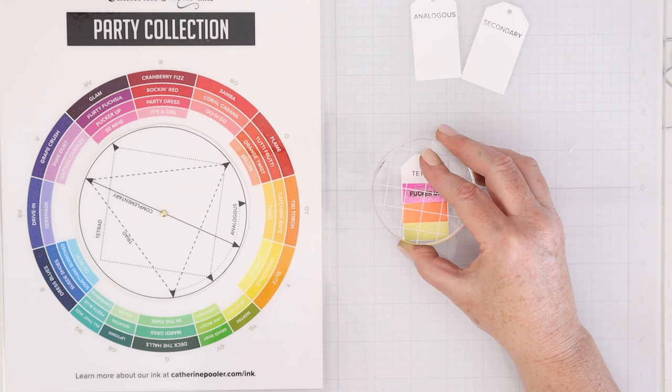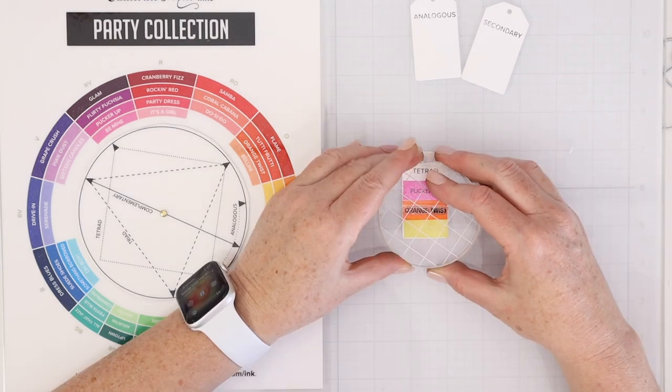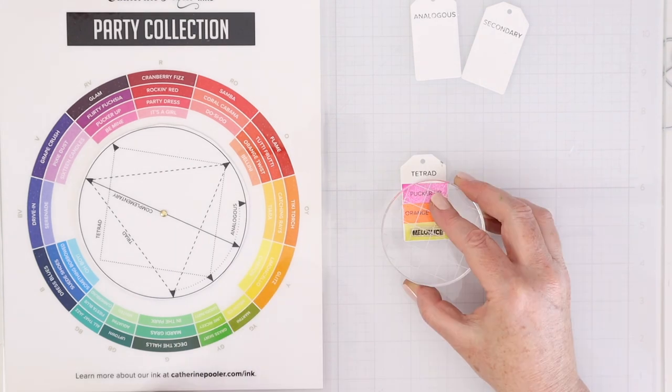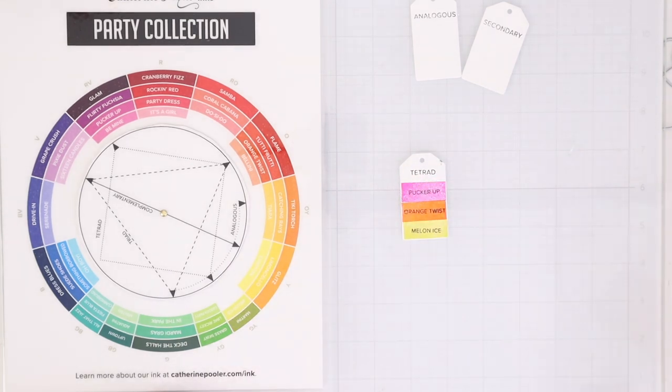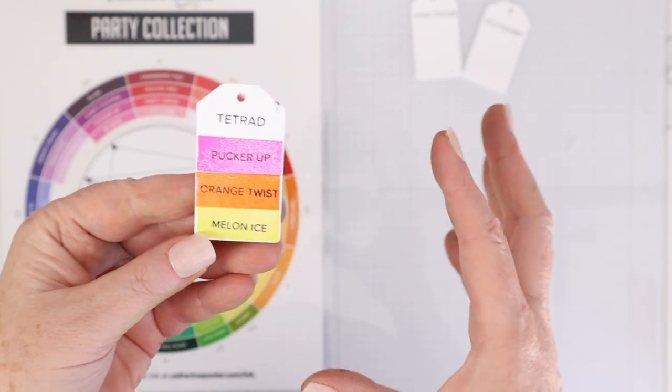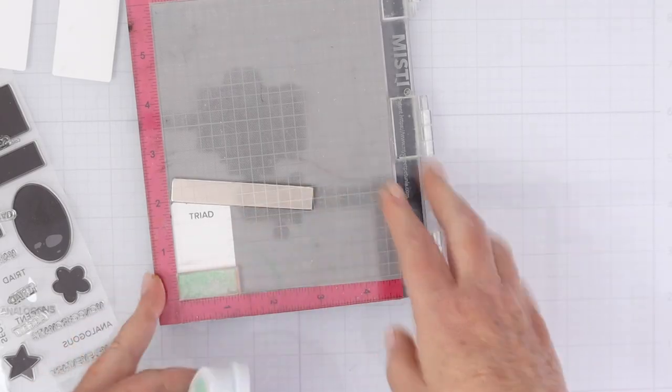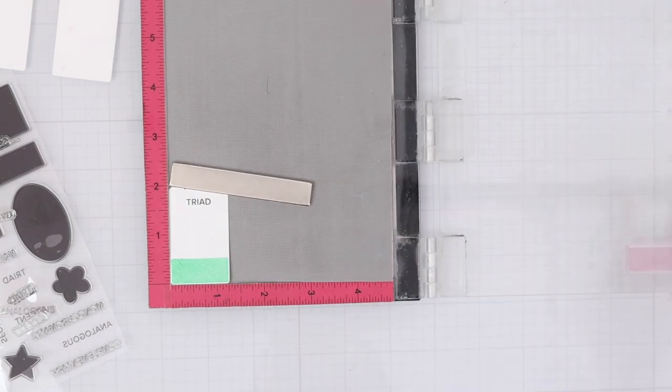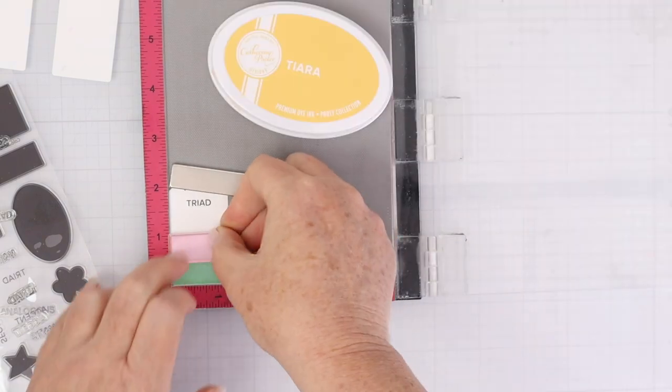Then you can take the ink colors stamp sets and you can stamp the names right on top of the color swatch. This way you know when you pick it up - Pucker Up, Orange Twist, and Melon Ice - that's a great color combination that will work because it's on the color wheel. So this is a very handy tool.